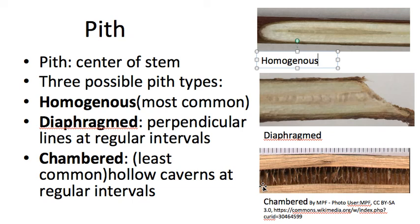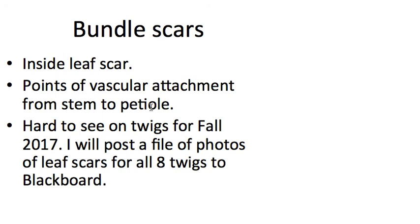I will also warn you that pith type is not always consistent within a species. For example, pawpaw twigs are sometimes homogenous and sometimes diaphragmed. You'll see in the key that sometimes whether you say something is homogenous or diaphragmed, you'll eventually get to the same answer.